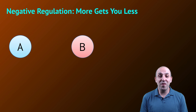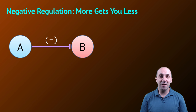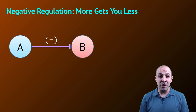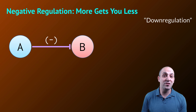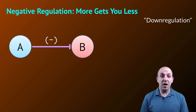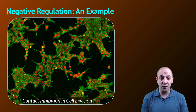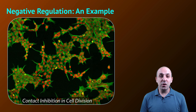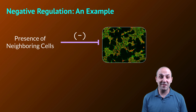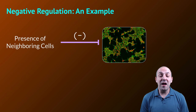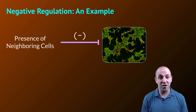Negative regulation is the opposite: more of one thing gets you less of the next. In a negative regulatory system, A has a negative impact on B — it decreases the amount of B. Another way of saying this is that A down-regulates B. Just like positive regulation doesn't mean good, negative regulation doesn't mean bad — it just means less. An example of negative regulation is contact inhibition in cell division. In a multicellular organism, cells that are dividing normally will stop dividing once they sense they're in the presence of neighboring cells. The signals sent by surrounding neighbors tell the dividing cells to stop. That's negative regulation, and it's incredibly beneficial. Negative doesn't mean bad, it just means less.